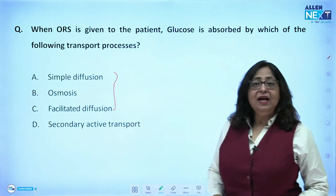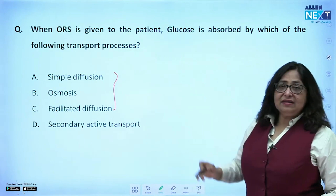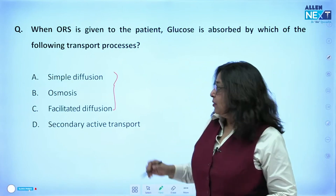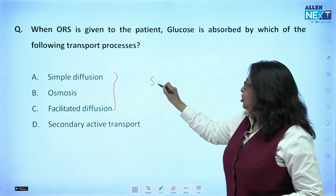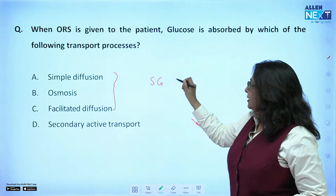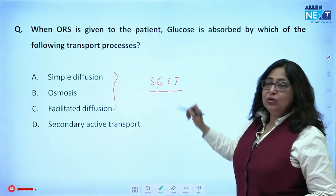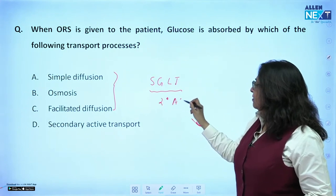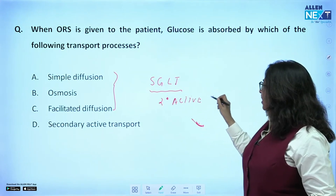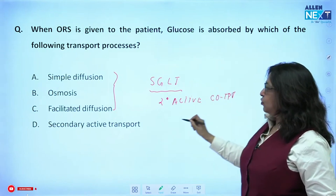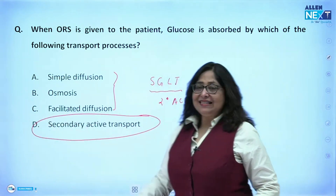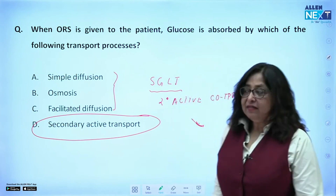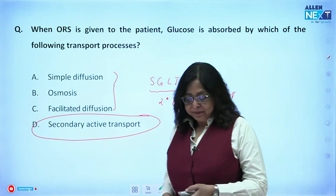Simple diffusion, osmosis, and facilitated diffusion are examples of passive transport. When ORS is given to a patient, how is glucose going to be absorbed? Glucose is absorbed by what is known as SGLT — Sodium-Glucose Linked Transport — which is an example of secondary active co-transport. So the answer to this question is secondary active co-transport.